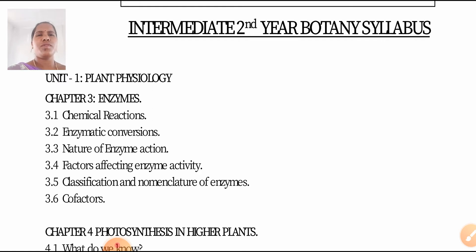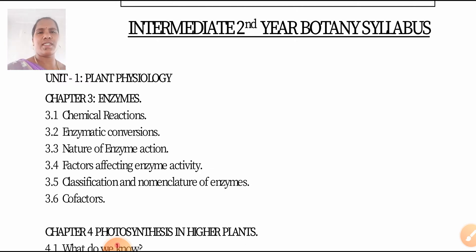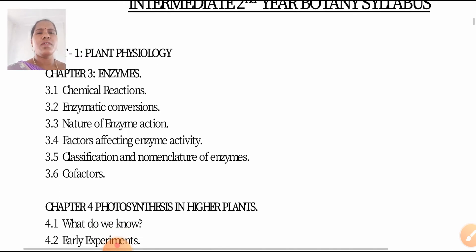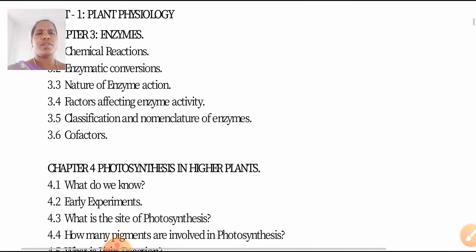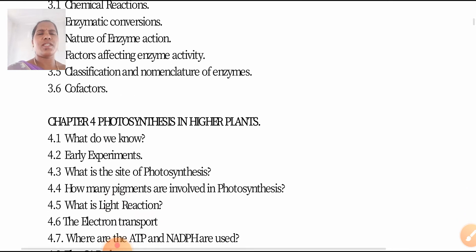Unit 1 is only 70% content. Next, Unit 4 is Photosynthesis in Higher Plants.